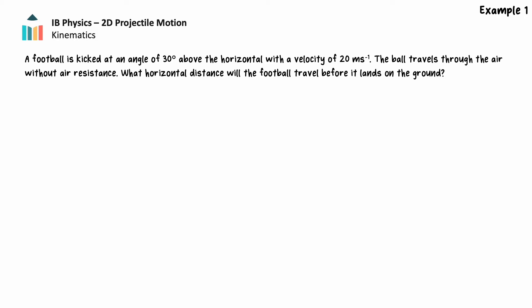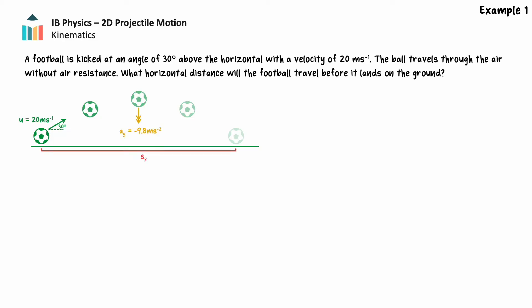Let's consider an example of a symmetrical two-dimensional projectile. A football is kicked at an angle of 30 degrees above the horizontal with a velocity of 20 meters per second. The ball travels through the air without air resistance. What horizontal distance does the football travel before it lands on the ground? We'll begin with a labeled diagram — we know the initial velocity, the angle, and the acceleration. Because the initial velocity is at an angle, we must break it into vertical and horizontal components prior to completing calculations. The horizontal component of the initial velocity is equal to 20 meters per second multiplied by the cosine of 30 degrees, or 17.3 meters per second.